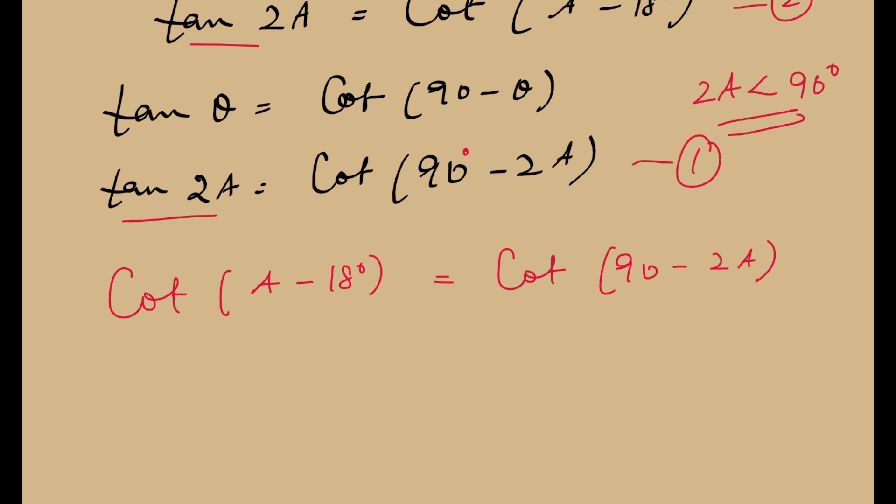And since both the trigonometric ratios are one and the same, we can equate the angles. A minus 18 degrees is equal to 90 degrees minus 2A. And now we have an equation with one variable which is A, and we can solve for A. Just let us bring all the variables to one side of the equation. A plus 2A is equal to 90 plus 18, or 3A is equal to 108 degrees.